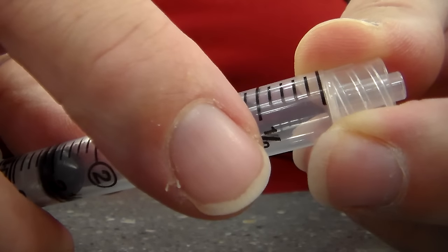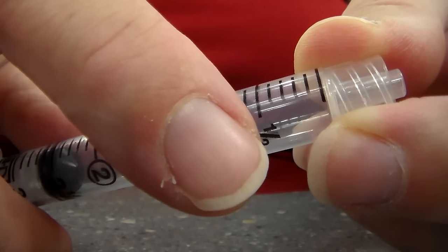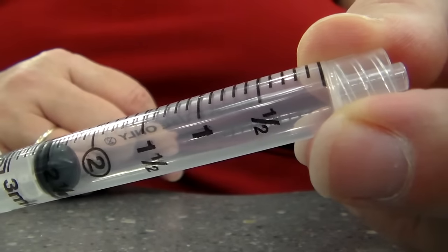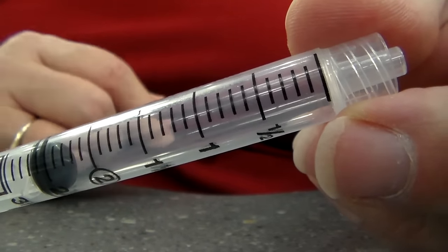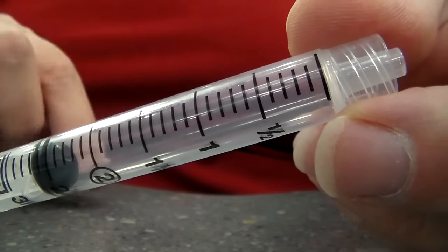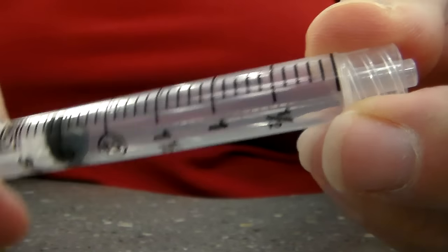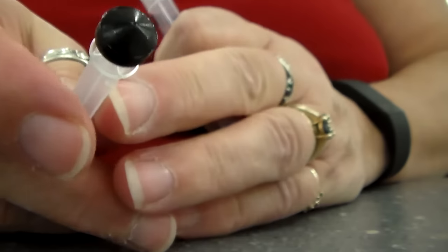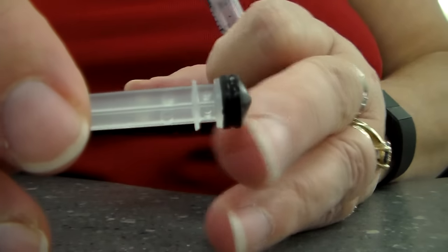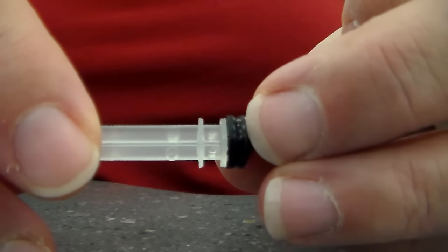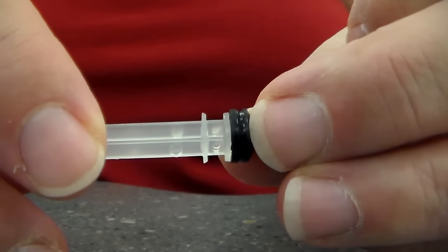For this three milliliter syringe, you see the one is right here. If this is a half, so that's 0.5, that means each line here is one. This black plunger, this thing right here, this line—that's what you want to line up with the numbers or the lines on the syringe.